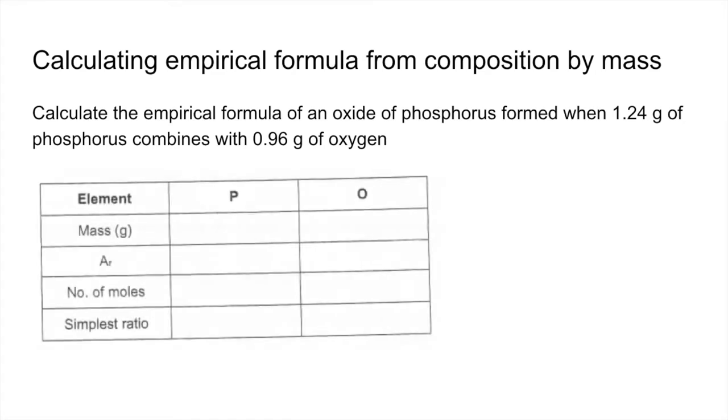Okay, so I always get my students to put their answers in a table and follow those four steps that you can see down the left hand side. So the first thing I'm going to do is put the mass in grams of phosphorus and oxygen in the compound. Then we're going to put the relative atomic mass of the atoms in the table.